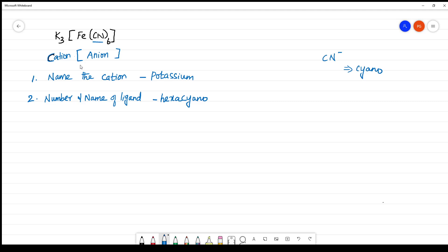So we name the ligand, next going to the central atom. Name the central atom. See, in the anionic complex, the central atom should end with 'ate'. Remember, in the anionic complex, the central atom should end with 'ate'. If the complex is cation, you will be normally naming it. So what is the name of the central atom? It is ferrate. It should end with 'ate'. The suffix is 'ate'.